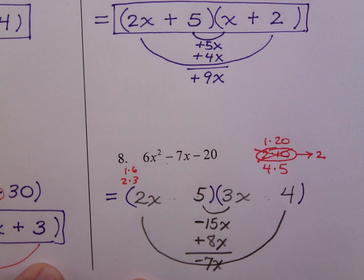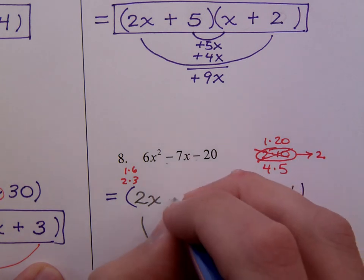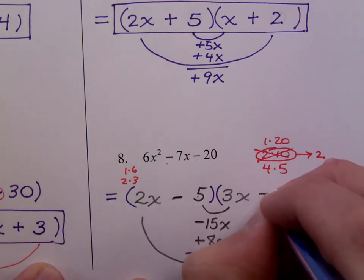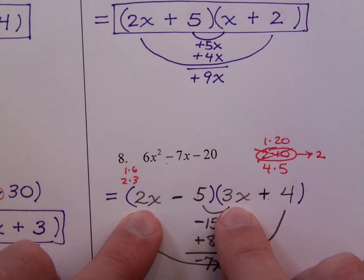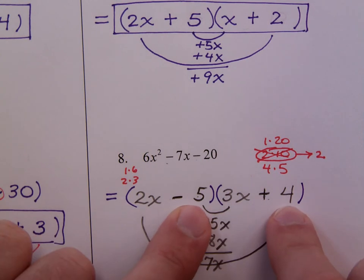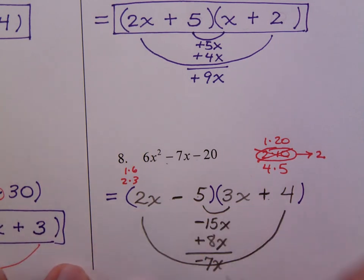So, to backtrack with the signs, that means the minus must be here, and the plus must be right there. So, when you check everything, you see that you do get your 6x squared, you get your negative 20. That's the easy stuff. But checking the inside, you get negative 15x, positive 8x on the outside, and you get the correct middle term.